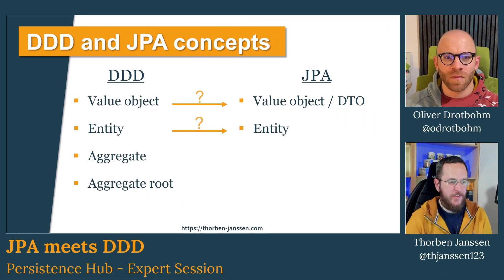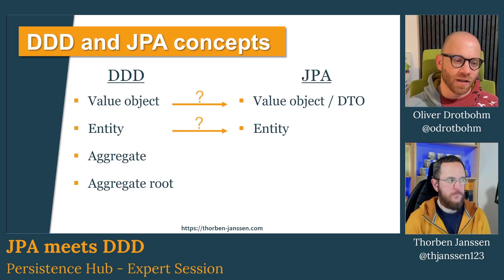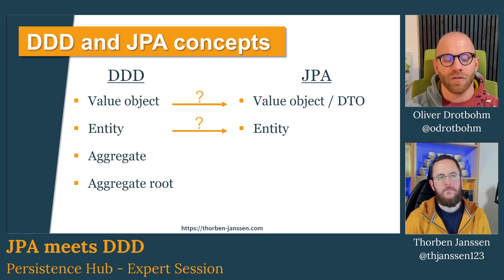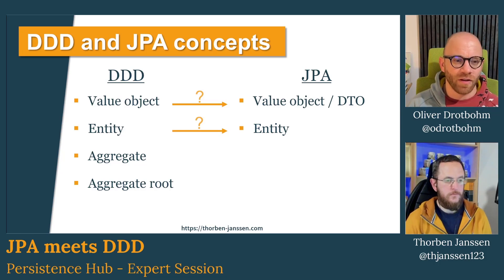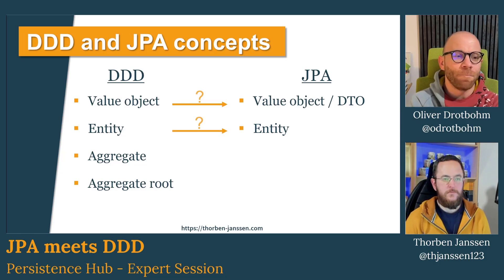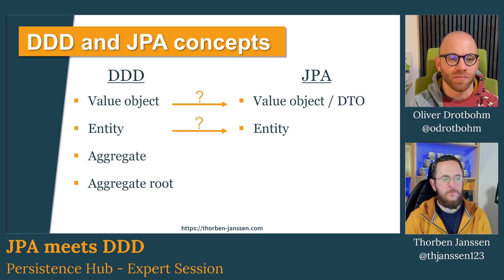Olli, tell us something about the DDD concepts. What do we have there? Fundamentally, the book is split into two different parts. One is called strategic design, which is about which bounded contexts you build — how to basically split up your domain into individual parts so that you can build either separate systems or modules in a single system. And then there's the other half of the book. The one that the book starts with is about what Eric calls tactical design, which is essentially a set of stereotypes that you find in your code that he defines. It's not a complete set — it's not the only concepts you could have in your applications, but he defines a couple of them that allow you to capture the essence of the domain in those stereotypes.